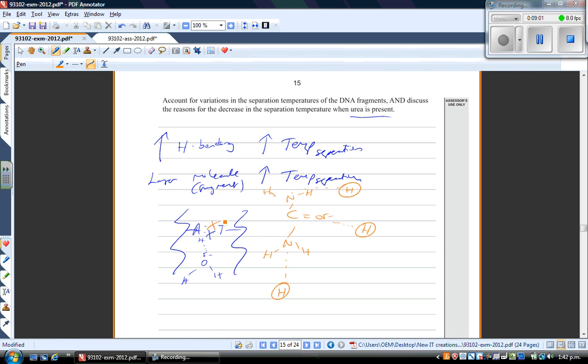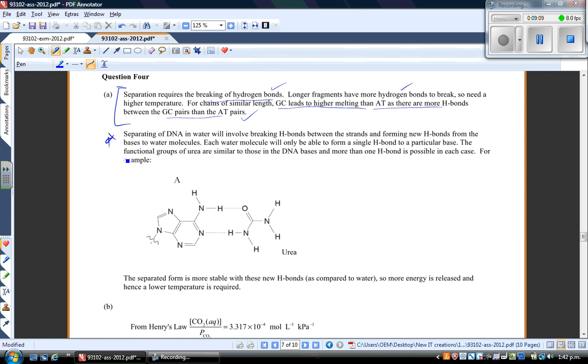And there's a nice diagram on the NCEA answer. So let's just take a look at that. And so separating of DNA, here we go. In water will involve breaking hydrogen bonds between the strands and forming new hydrogen bonds from the bases to water molecules. We covered that. Each water molecule will only be able to form a single hydrogen bond to a particular base. So this is the limitation of water. You can only form one hydrogen bond using that oxygen right there. Just one.